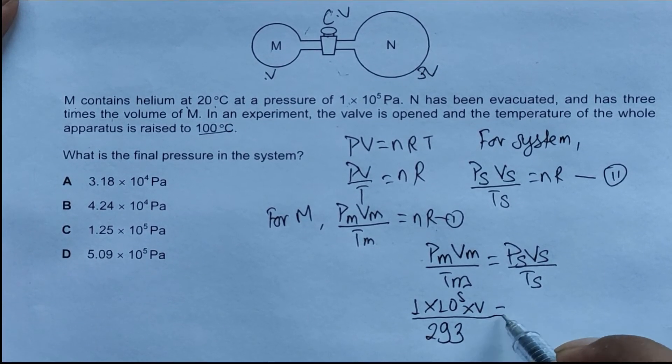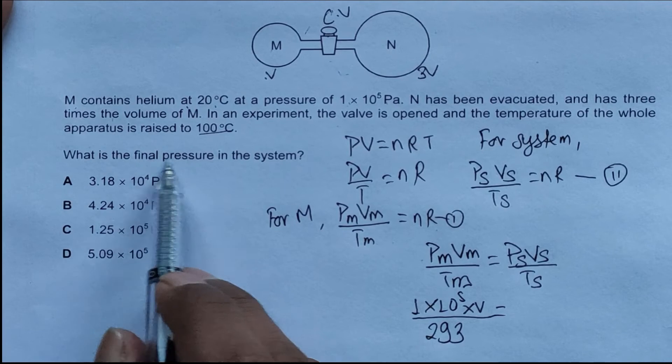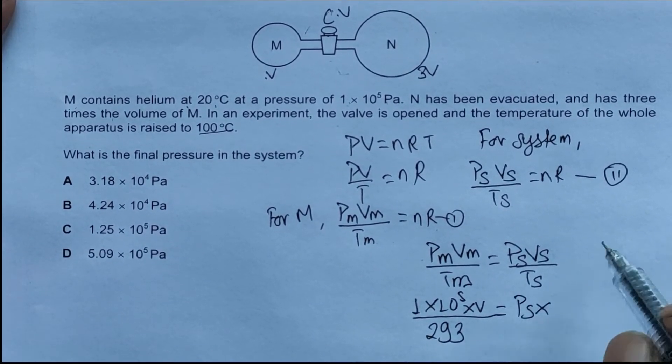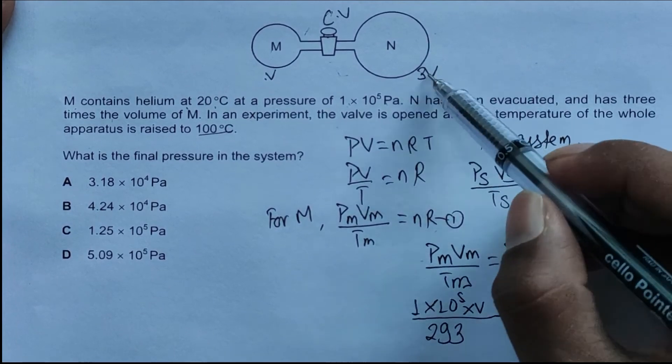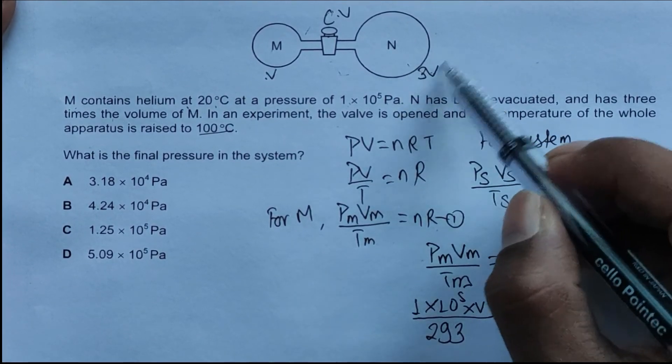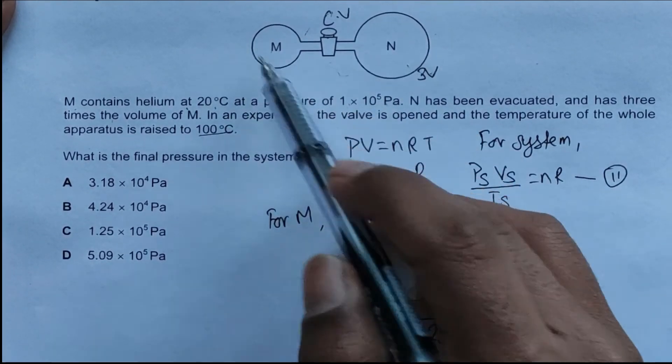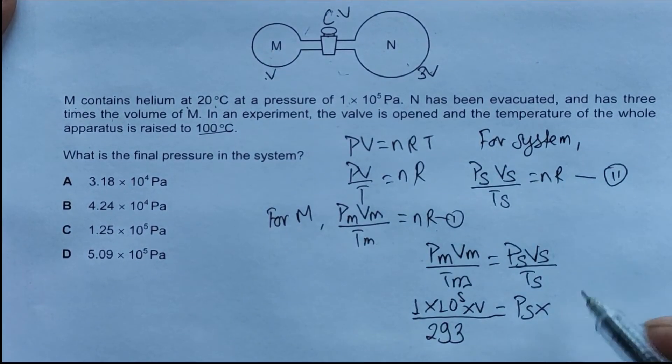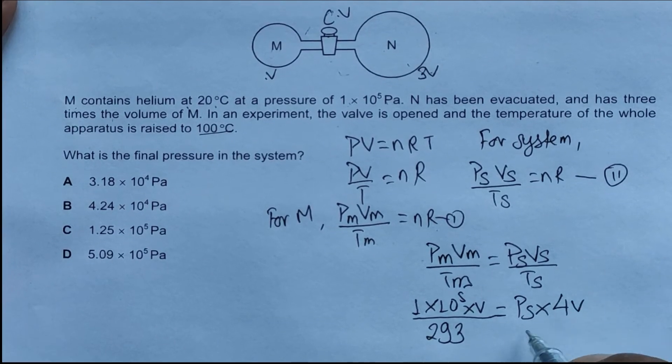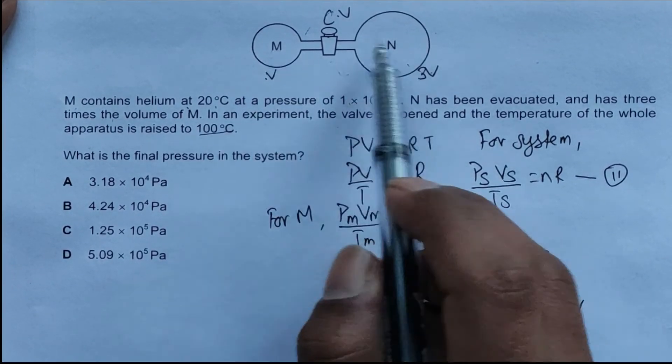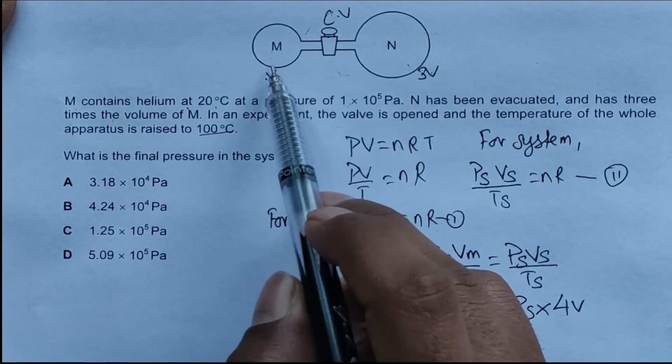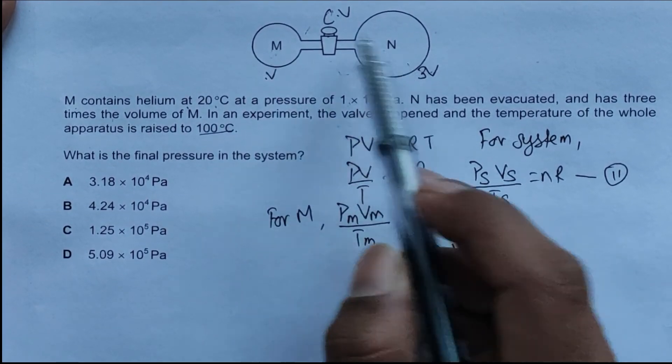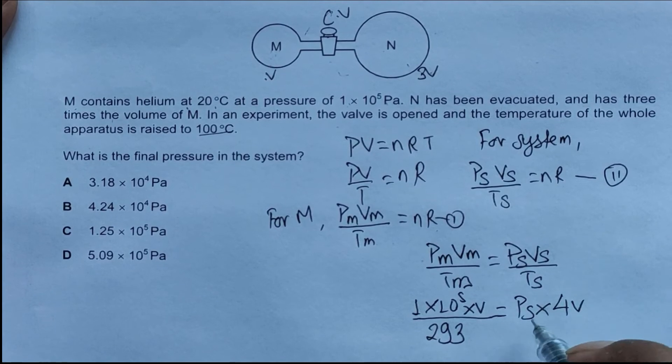This equals P_S, which we are supposed to find. V_S of the system is the volume of vessel N plus M, so V_S is 4V because M is V and N is 3V.